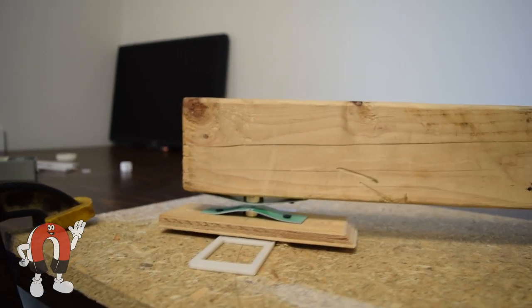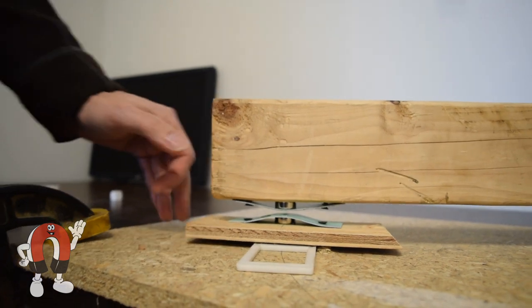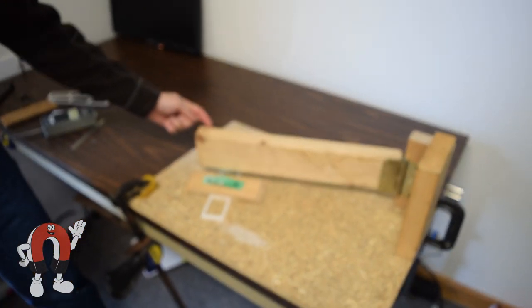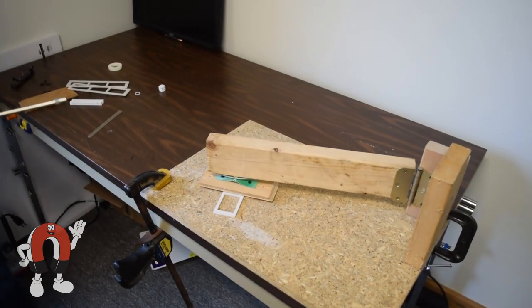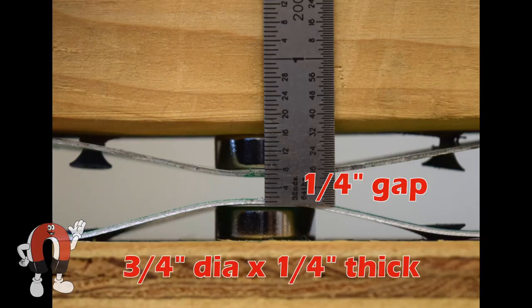The magnets are pulling to each other axially with some force, but what's the force required to push the magnets apart? In other words, how much force do I have to apply to the door to move it? In this setup we have two three-quarter inch diameter by quarter inch thick magnets separated by a quarter inch gap.